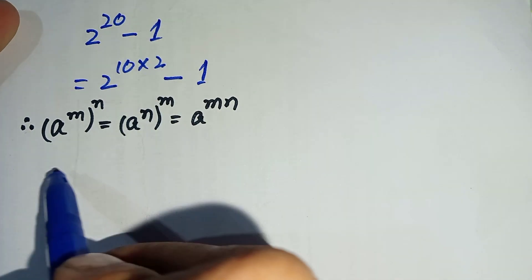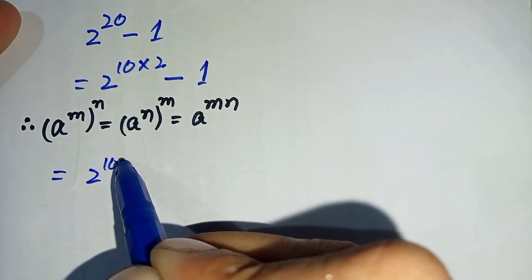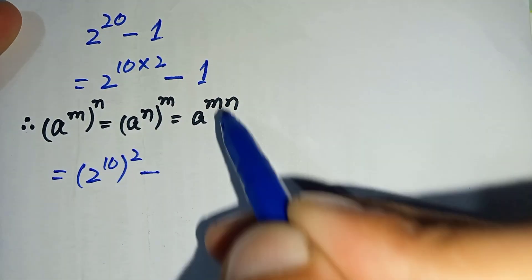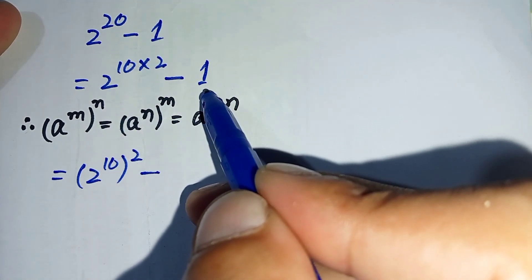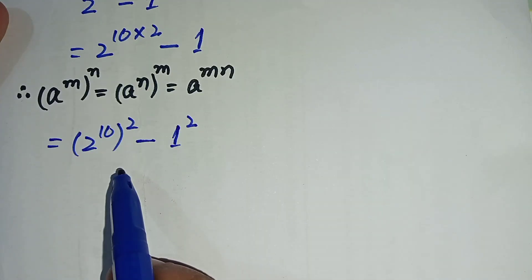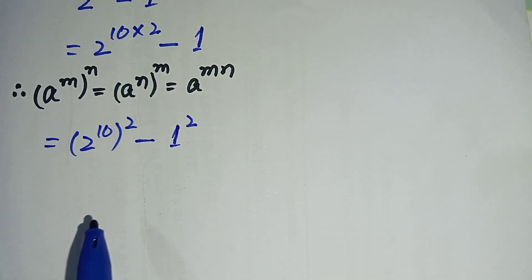This equation can be written as (2^10)^2 minus 1. We can also write 1 as 1^2. Now we will use an algebraic identity.